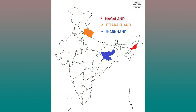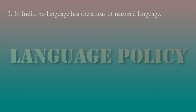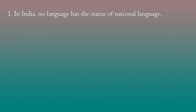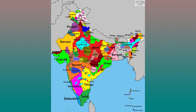Now we can move to the second point: language policy. In India, no language has the status of national language. Besides Hindi, there are 21 other languages recognized as scheduled languages by the Indian Constitution, which can be used by the states as an official language. Scheduled language means 22 languages are included in the eighth schedule of the Indian Constitution, and therefore called scheduled languages.